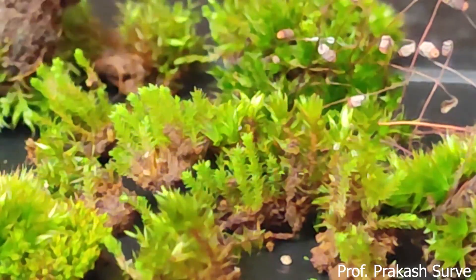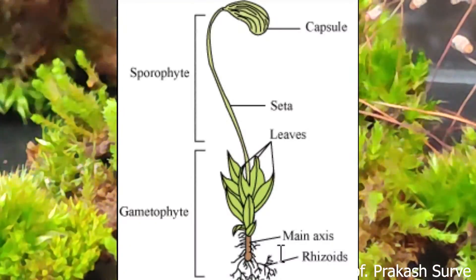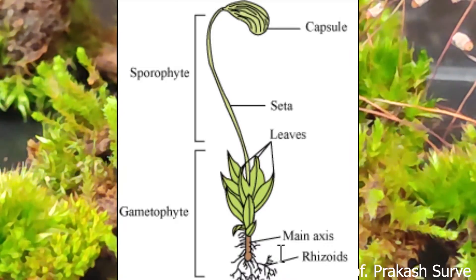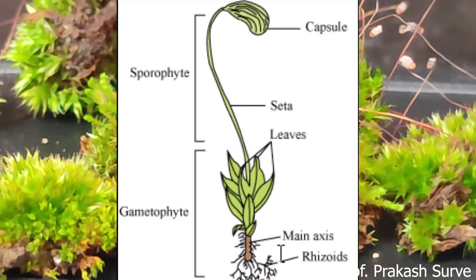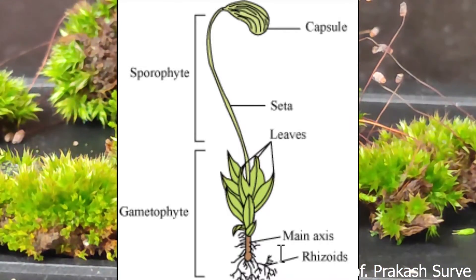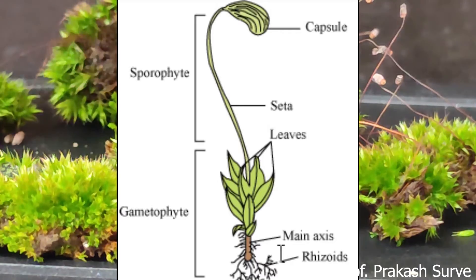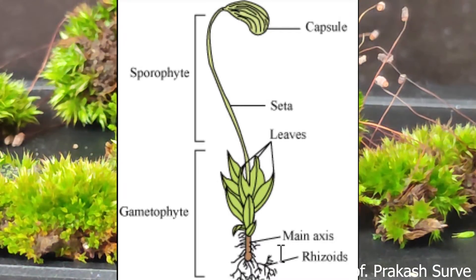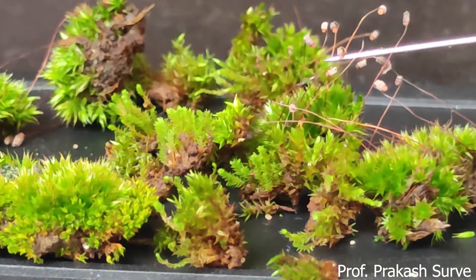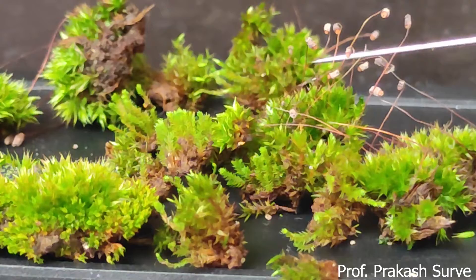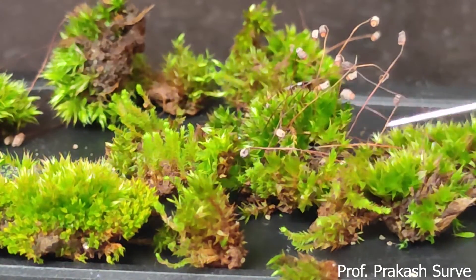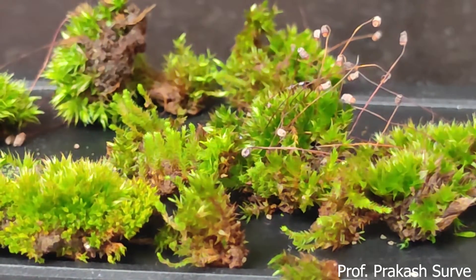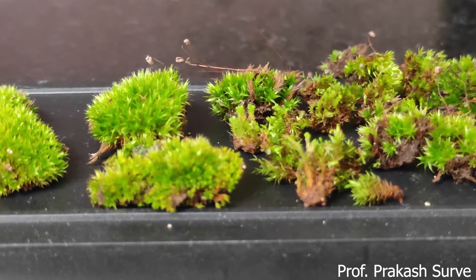The plant body is divided into the gametophyte and sporophyte. The gametophyte has the leaf-like structures and the sporophyte produces spores which are inside the capsule. We can see numerous capsules at the top, showing the presence of spores inside.